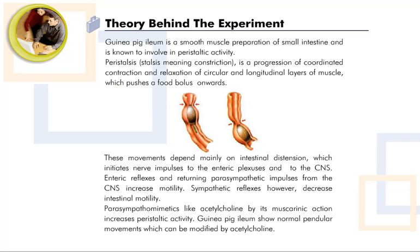Guinea pig ileum is a smooth muscle preparation of small intestine known to be involved in peristaltic activity. Peristalsis — 'stalsis' meaning constriction — is a progression of coordinated contraction and relaxation of circular and longitudinal layers of muscle which pushes the food bolus onwards.